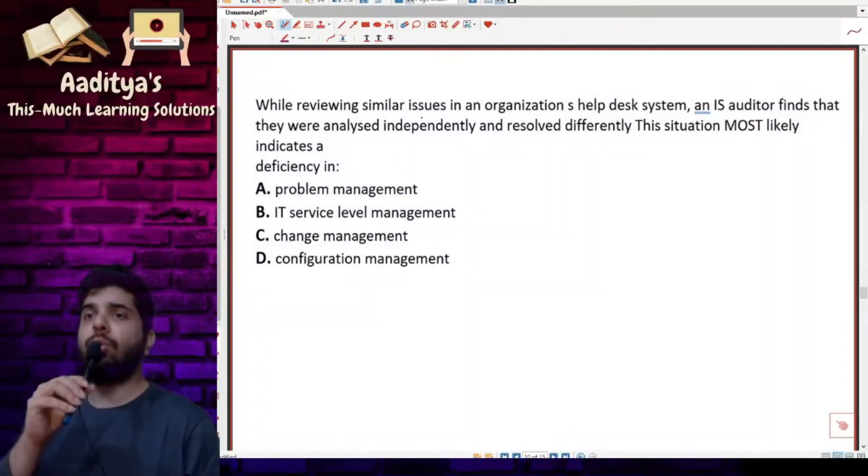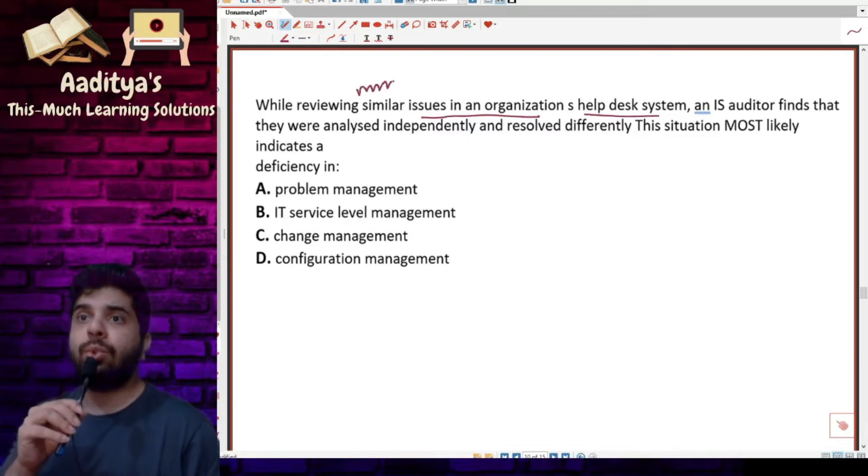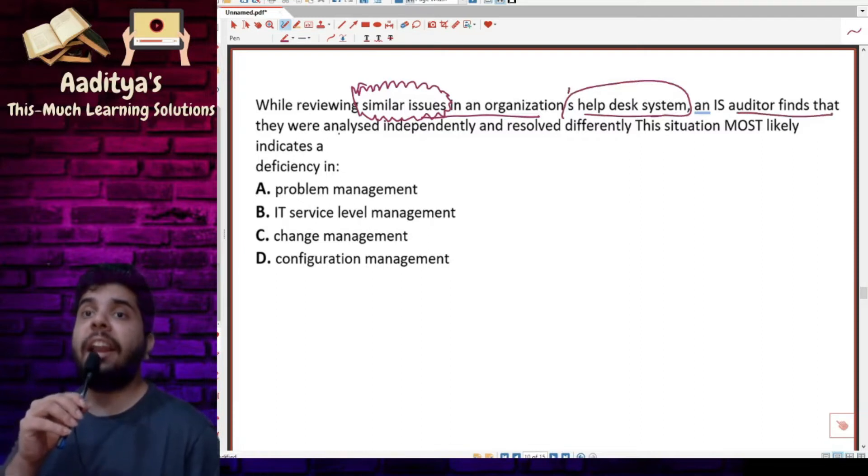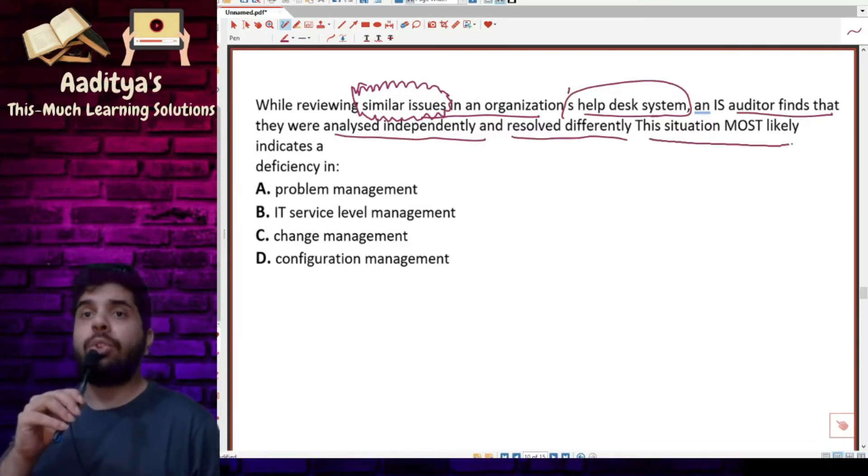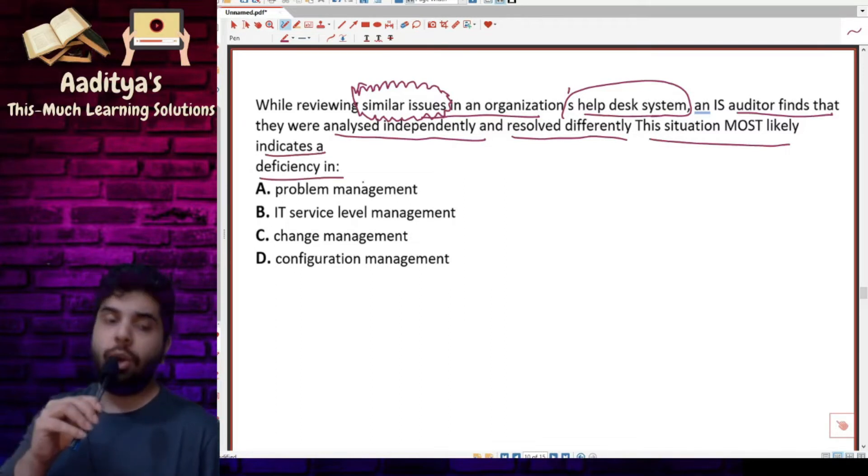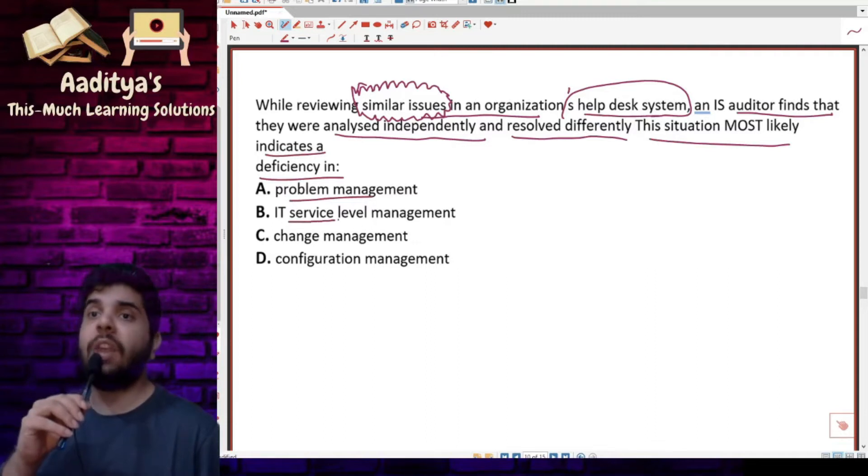While reviewing similar issues in an organization's help desk system, an IS auditor finds that they were analyzed independently and resolved differently. This situation most likely indicates a deficiency in: option A, problem management; option B, IT service level management; option C, change management; option D, configuration management.